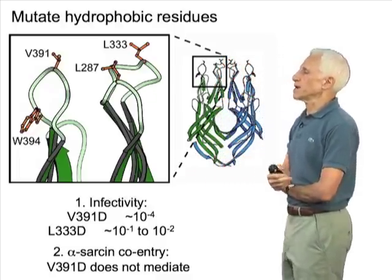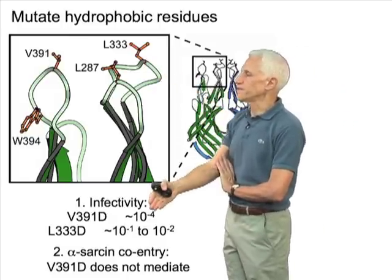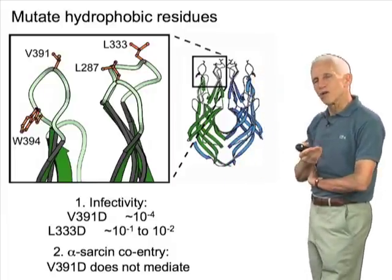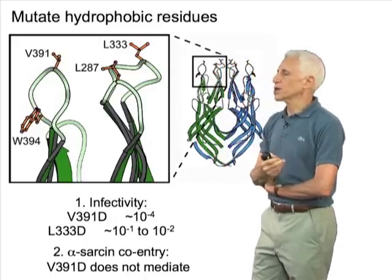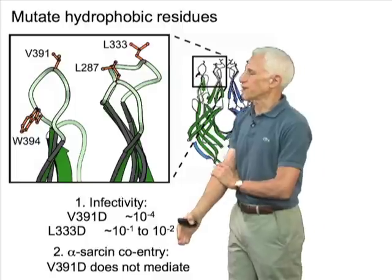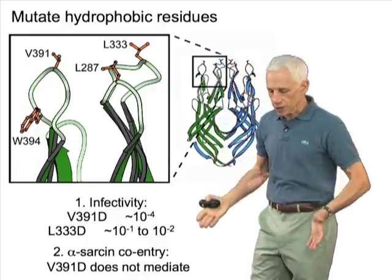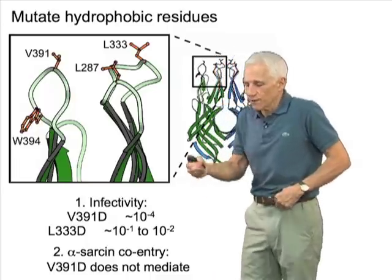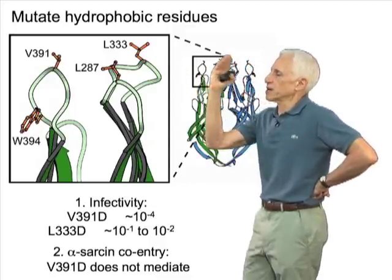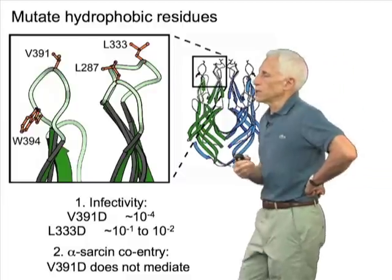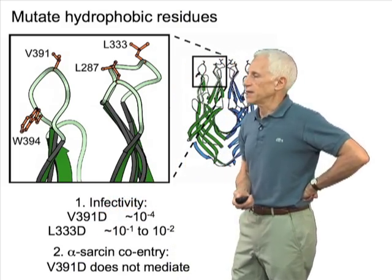We can use this trick to do two things: mutate the hydrophobic loops and ask whether the virus infects, and also watch virus particles getting into a cell. Experiments carried out by Irene Kim, a graduate student, showed that if you mutate the hydrophobic residues, you lose infectivity—the virus becomes engulfed in the cell but never infects. You can also show it never disrupts a membrane, because the virus can allow a toxin called alpha-sarcin to get into the cell if it actually perforates an endosomal membrane, but the hydrophobic loop mutations block both infectivity and the capacity to sweep this toxin into the cell.